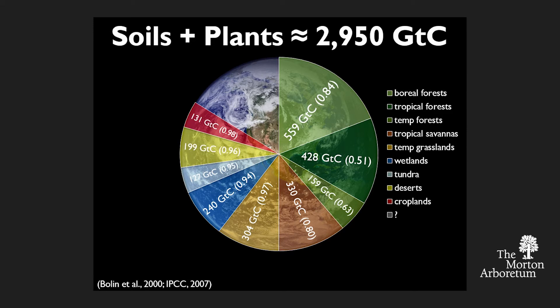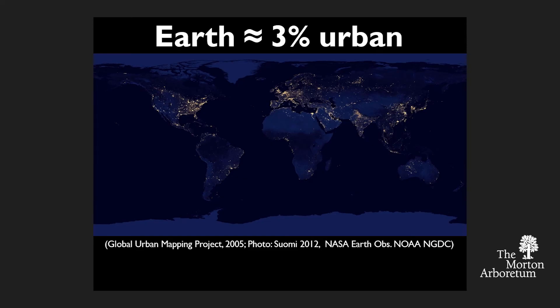And then we have this missing chunk. Any ideas what this missing chunk is? We don't really know. What I'm proposing is that maybe some of this missing chunk — a big portion, or maybe a smaller portion — might be found within the urban area.